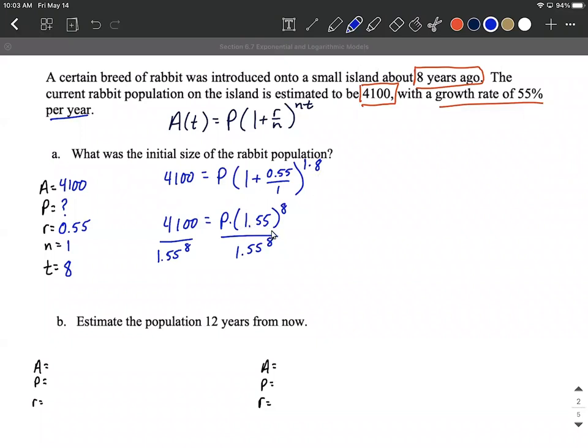I went ahead and reduced down a little bit first, but I don't think you should need to. So P is going to be about 123 to the nearest whole rabbit introduced onto this island that many years ago.